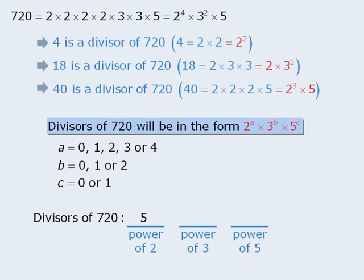On to the next stage. The power of 3 can be 0, 1, or 2, so there are 3 ways to accomplish this stage. And finally, the power of 5 can be either 0 or 1, so there are 2 ways to accomplish this stage. Applying the fundamental counting principle, we multiply the number of ways to accomplish each stage to see that there are 30 ways to accomplish all 3 stages. So 720 has 30 positive divisors.